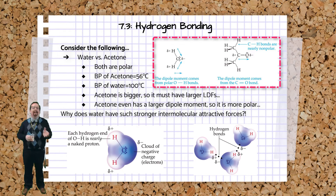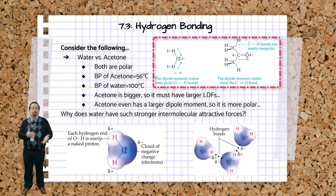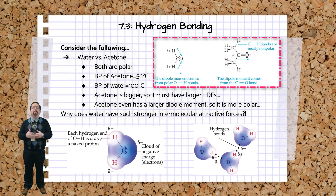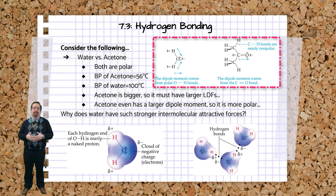What about the difference between water and acetone? They're both polar, so they both have dipole-dipole forces. Acetone is a much larger molecule, and in fact it's actually more polar than water. So you might predict that it has stronger intermolecular forces, causing it to have a much higher boiling point. Well, that's not true. Acetone's boiling point is only 56 degrees Celsius. Why is water 100? This is due to a special type of dipole-dipole force known as hydrogen bonding.